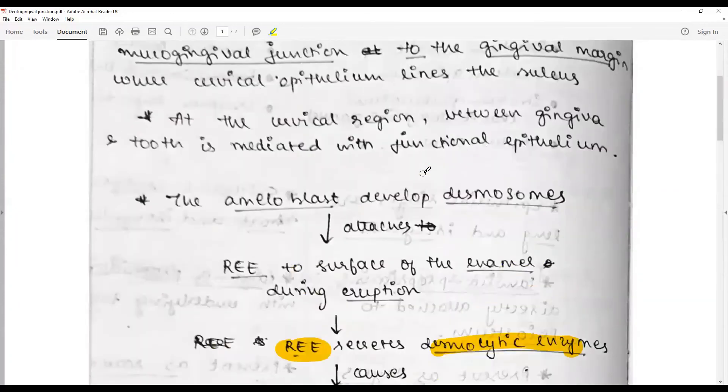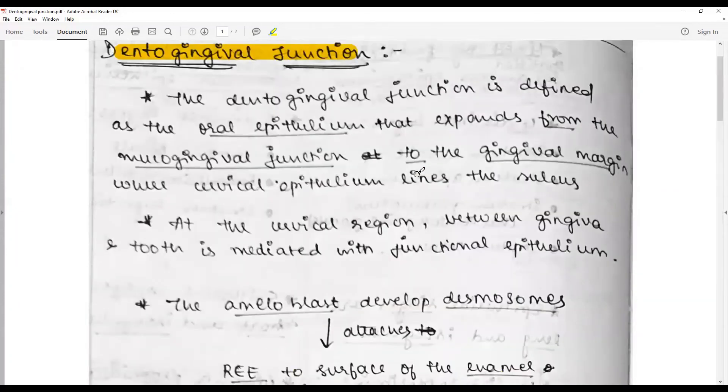You can add up on the sulcular epithelium, the type of keratinization that is parakeratinized because it is a part of masticatory mucosa, whereas sulcular epithelium is non-keratinized. All these concepts you can add up and build upon.